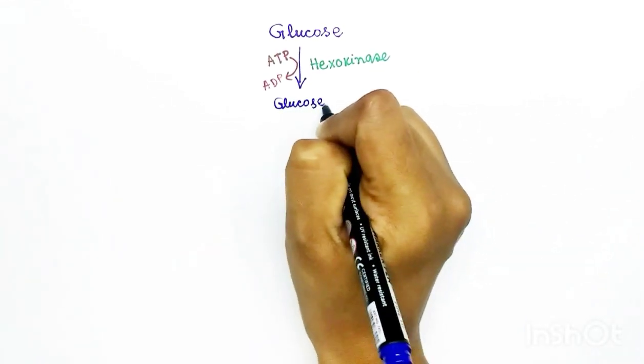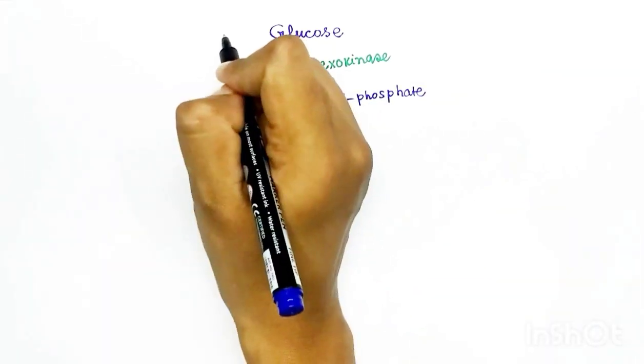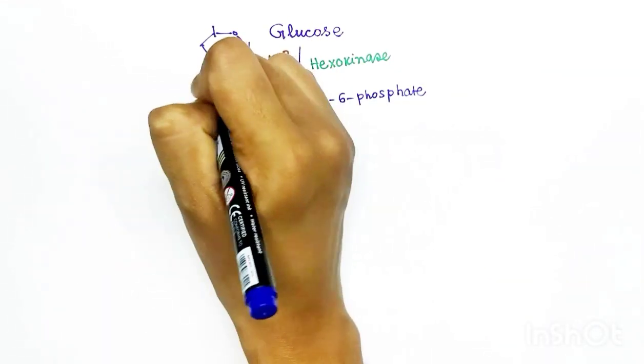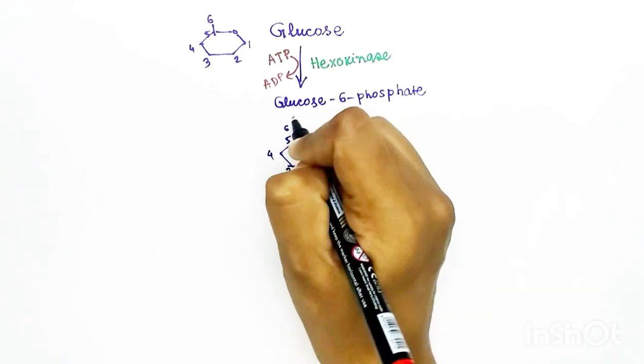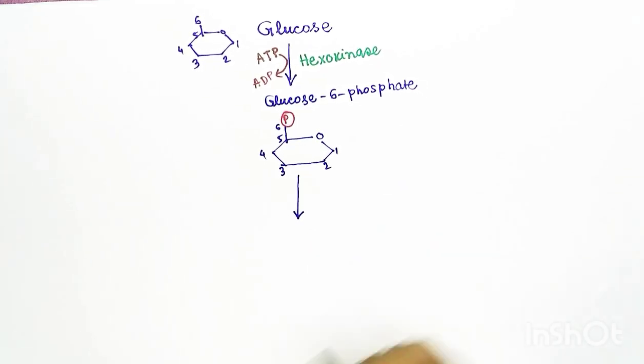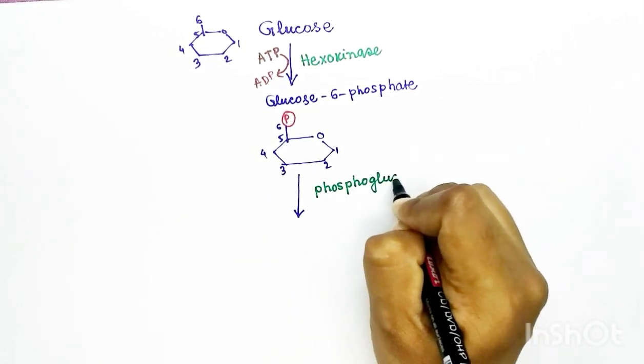In the first step of glycogenesis, one phosphate group is added to glucose by an enzyme called hexokinase. Glucose is a six carbon compound and the first phosphate group is added to the sixth carbon and the product name is glucose-6-phosphate.